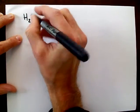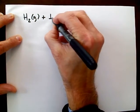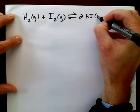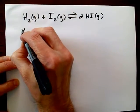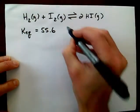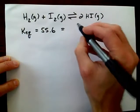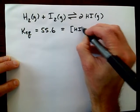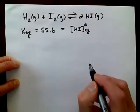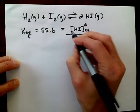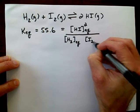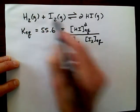Last time we looked at this reaction where hydrogen gas reacted with iodine gas reversibly to form two moles of HI gas. We learned that the equilibrium constant for this reaction was 55.6, and we can write the equilibrium constant as the concentration of hydrogen iodide squared at equilibrium — the squared is because of the stoichiometric coefficient two — divided by the concentration of each reactant at equilibrium raised to their stoichiometric coefficients, which is one in both cases.